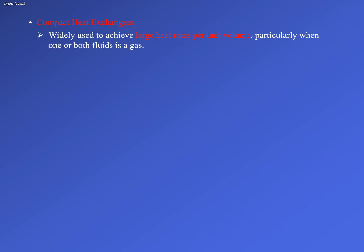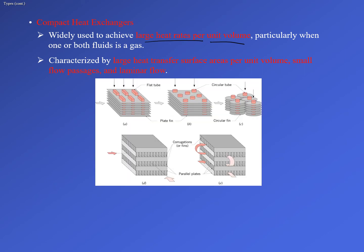Compact heat exchangers are designed to achieve a large rate of heat transfer per unit volume. They use many passes, lots of tubes, and fins — flat, circular, or corrugated — to maximize interaction between the two fluids across the minimum possible volume. Corrugated fins are typically used when air rather than liquid is the cross flow fluid.